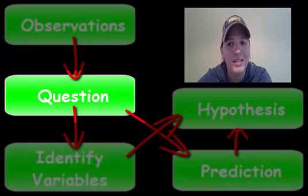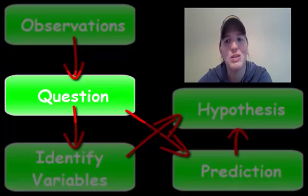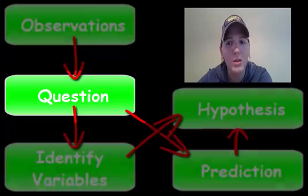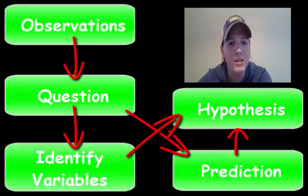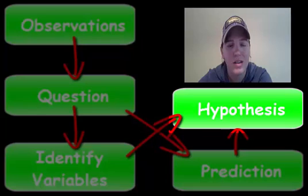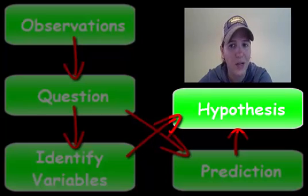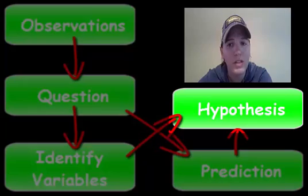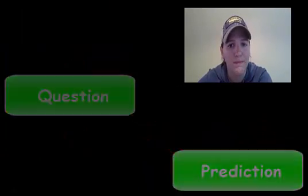In the scientific method — the steps that we learn in school — really the only two steps are question and hypothesis. Everything else: observations, identifying variables, and predictions, are all part of these two things and are not actually found in the lab report.